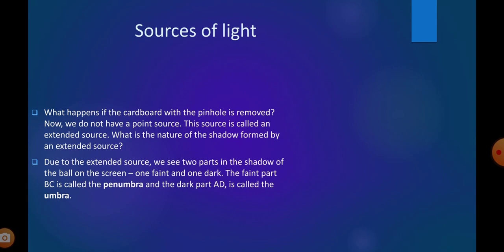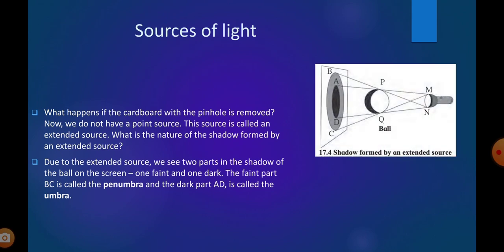What happens if the cardboard with the pinhole is removed? Now, we do not have a point source. This source is called an extended source. What is the nature of the shadow formed by an extended source? Suppose you are removing the screen with the pinhole and instead of that keep any other bulb or torch or bright light. Those are all extended sources.